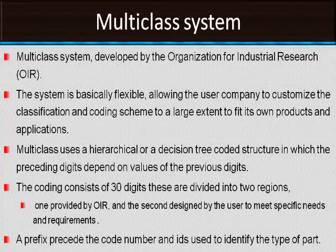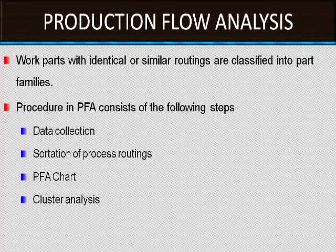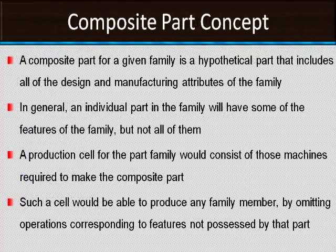A prefix precedes the code number and is used to identify the type of part. The next methodology is production flow analysis (PFA). Work parts with identical or similar routings are classified into part families. Production flow analysis is a method of classification based on manufacturing attributes. The procedure for PFA, developed by Burbridge, requires the following steps: first, data collection; second, sorting of process routings; third, preparation of the PFA chart; fourth, cluster analysis.